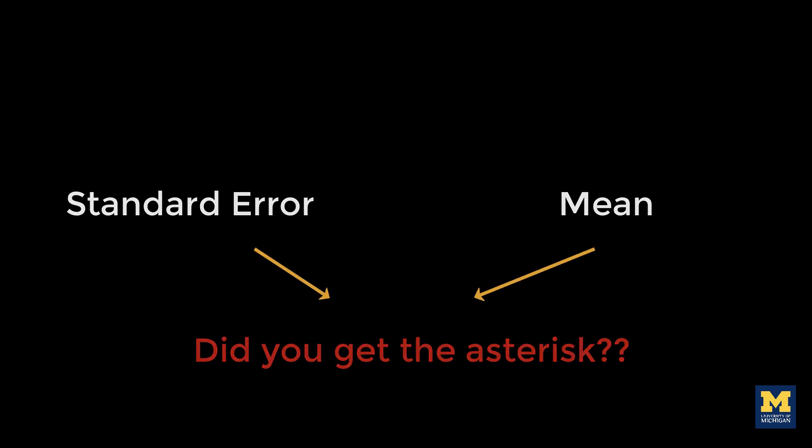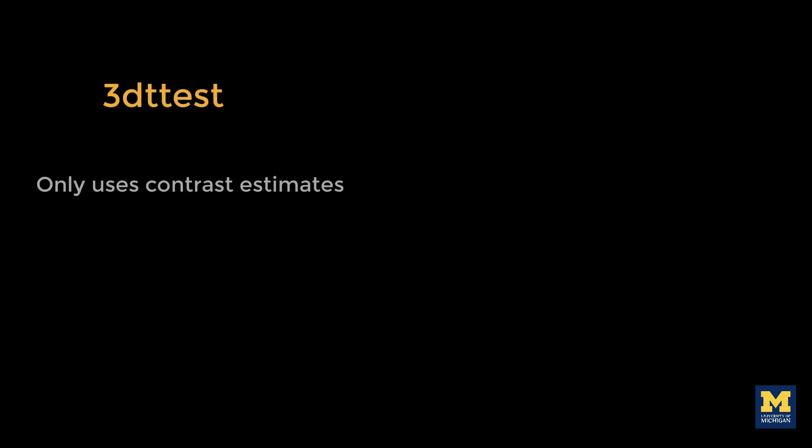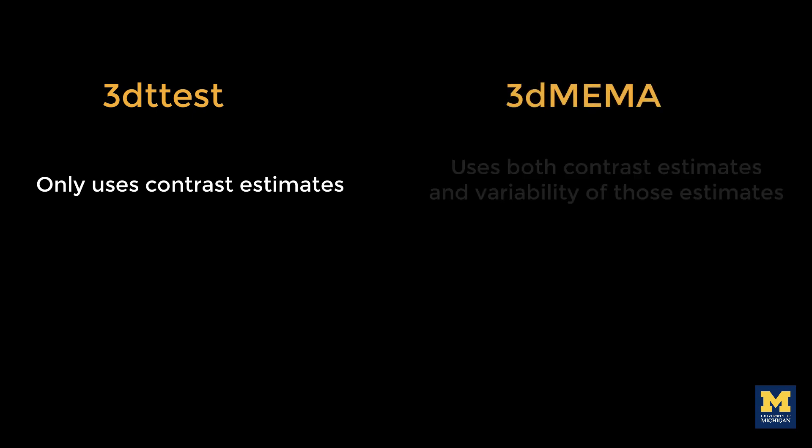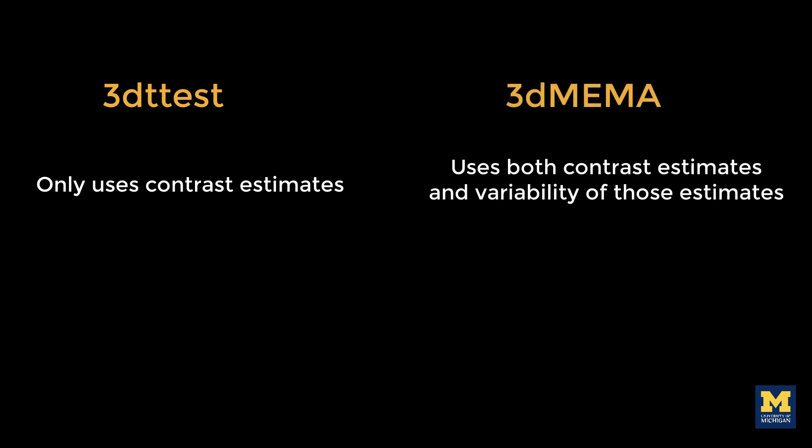We will do this group-level analysis in two ways: using 3D t-test, which uses only the contrast estimates, and 3D MEMA, which accounts for both the difference between the parameter estimates and the variability of that contrast.